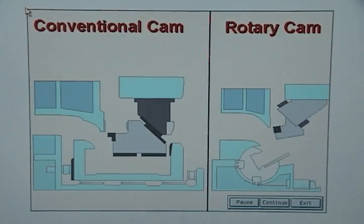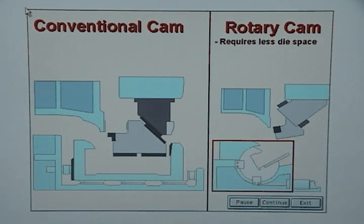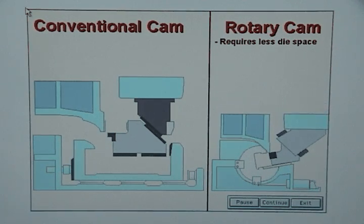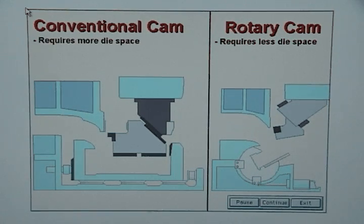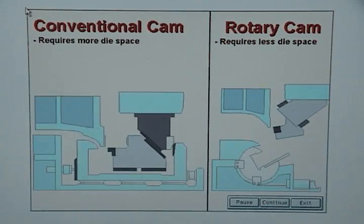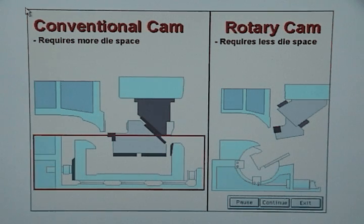Rotary cams have several advantages over conventional cams. Rotary cams are compact and take up less die space than conventional cams. The rotary motion allows flanging operations to be performed using a small amount of die space, whereas the horizontal motion of conventional cams takes up a lot of die space.